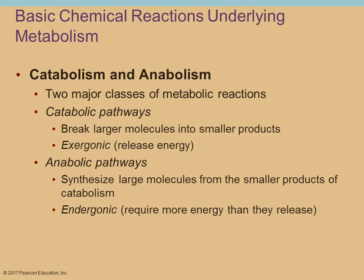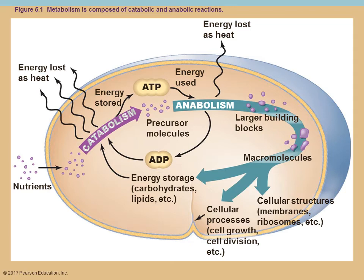The two major categories of reactions are catabolic versus anabolic. In catabolic pathways, you are taking larger molecules and breaking them into smaller compounds. This is going to release energy, so it's called an exergonic reaction. Anabolic reactions is the reverse — taking smaller molecules and connecting them together, forming bonds to make larger molecules. That requires energy, and so that is known as the endergonic reaction. They're tied together so the energy released from catabolic reactions is used by anabolic reactions.